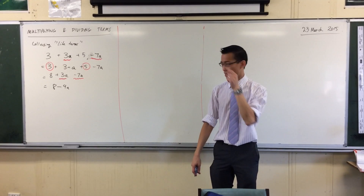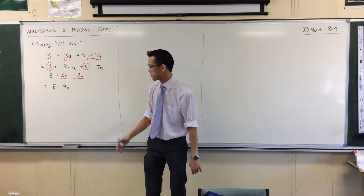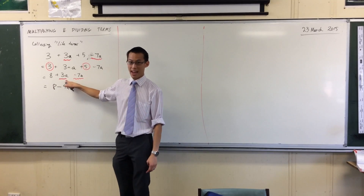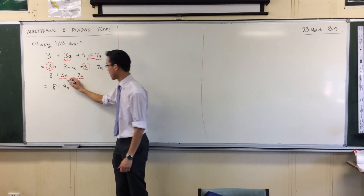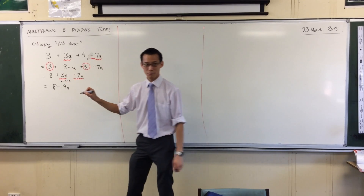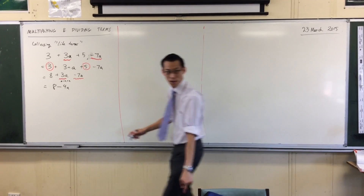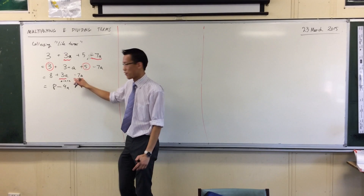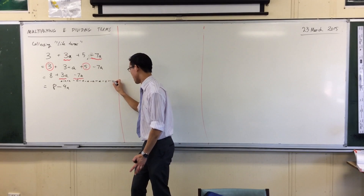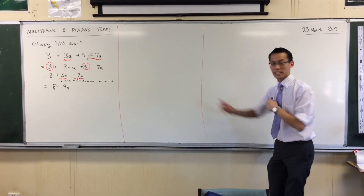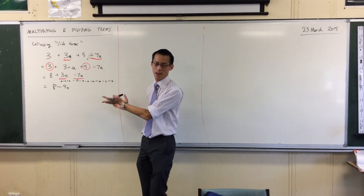One last thing to notice: when we put together 3a and minus 7a, the a's didn't disappear. It didn't become minus 4, as if I've got a and I take away a. There's multiplication hiding in there. So what 3a is really short for is a plus a plus a. And minus 7a is minus a, seven times. That was collecting like terms. But now we're going to step it up a little bit — multiplying and dividing terms is what we're going to do.